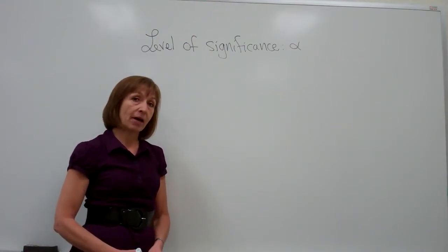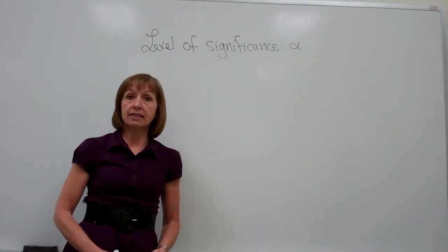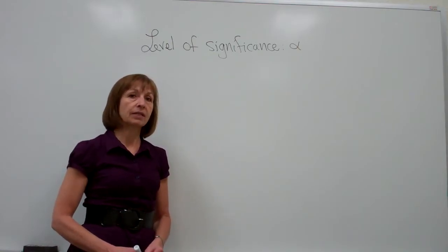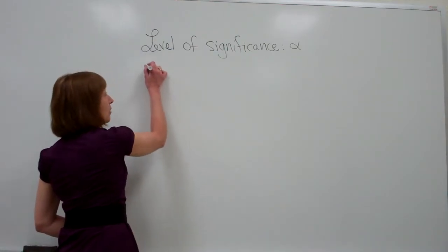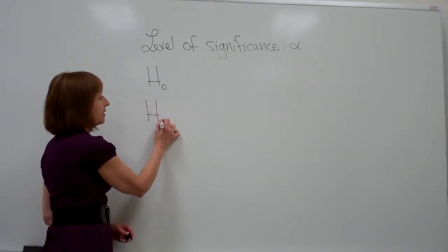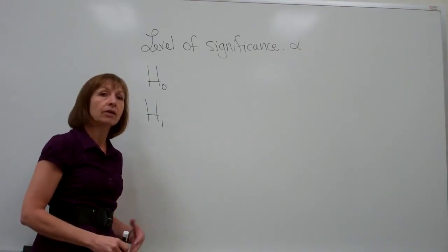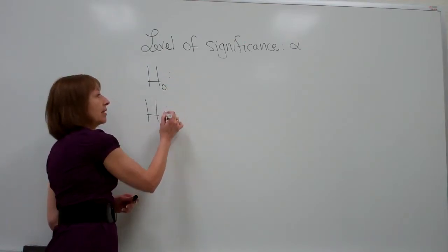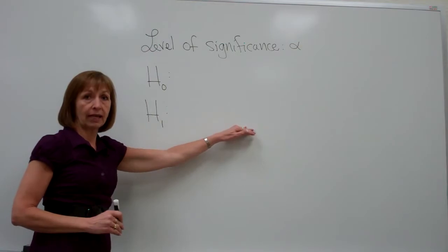The other parts of a hypothesis test to start with is to actually set out in sentence form what it is that you're testing with the claim. To do that in an organized manner that people can understand, we set up what are called the null and alternate hypotheses. The null hypothesis is denoted as H sub 0, and the alternate hypothesis is denoted as H sub 1, or sometimes H sub a, where a is the first letter of the word alternate.